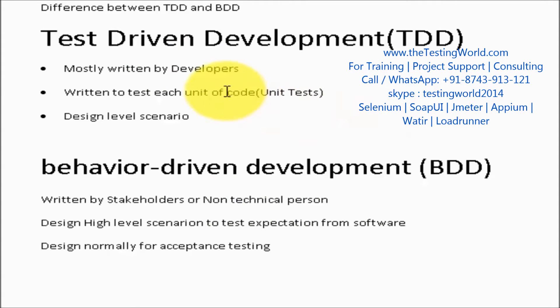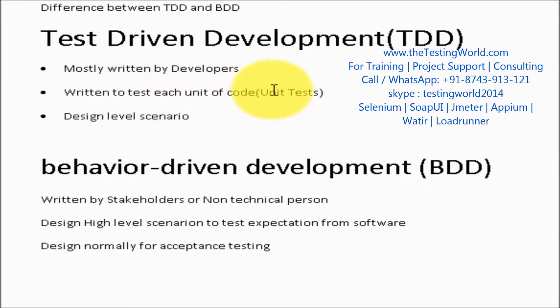In TDD, test cases are written to test each unit of code, meaning we are writing test cases for each function and each class. So we are writing code at the unit level — each and every function and class is going to be tested by this TDD approach.